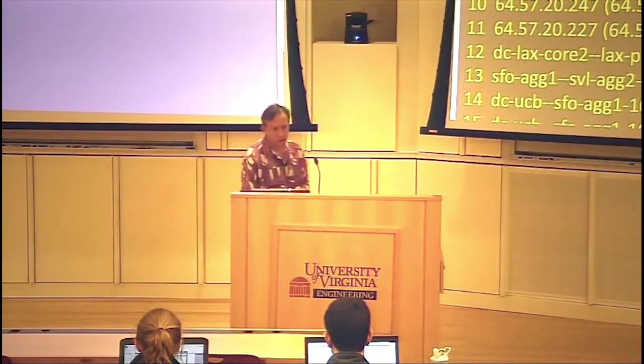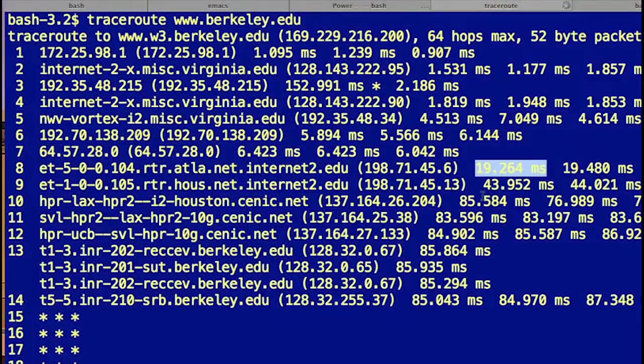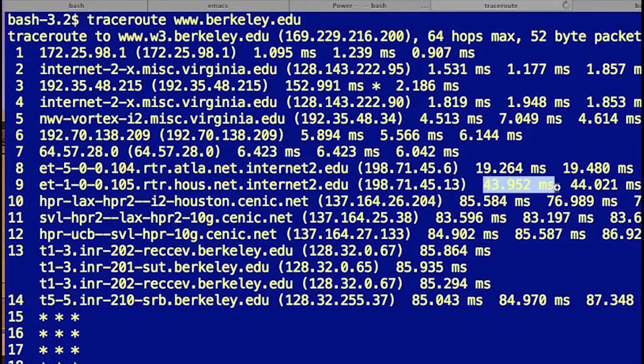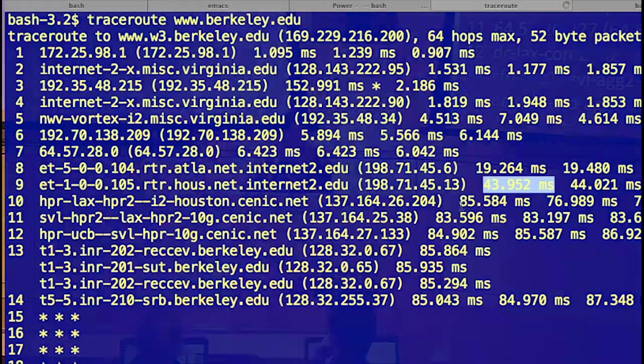And then the next big one, going from Atlanta to Houston, that's taking another 20 or so milliseconds round trip, so 10 milliseconds for that distance. And that's getting pretty close to light speed for between the hops. And then there's time wasted in the routers. You can see the big hop here.